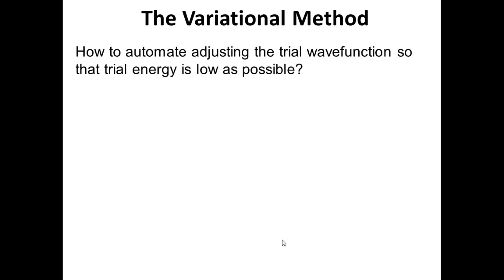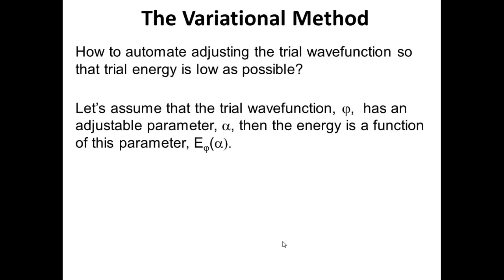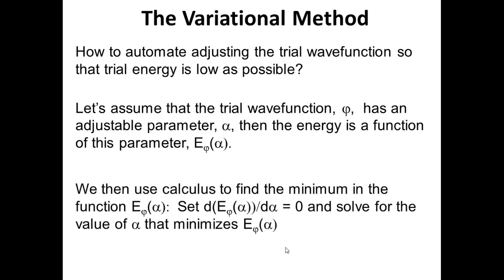So if we can come up with an algorithm that automatically adjusts our variational parameter, we can get closer and closer to the actual energy and wave function for the system of interest. If our trial wave function phi has an adjustable parameter alpha, then the energy is a function E(alpha). Since the variational principle says the best answer is when the energy is at a minimum, all we have to do is find the minimum of E(alpha): we set the derivative of the energy expression with respect to alpha equal to zero and solve for the value of alpha that minimizes E.